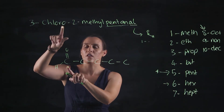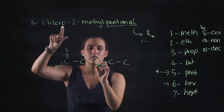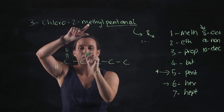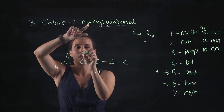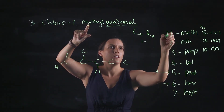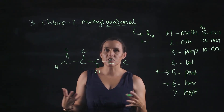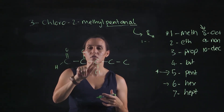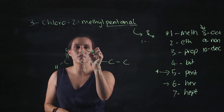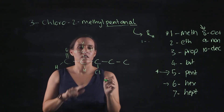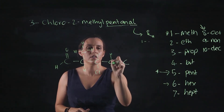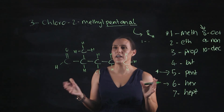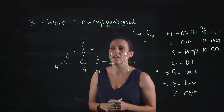Now for the substituents: carbon one is established, so on carbon three I have a chloro — one, two, three — I'll draw it down. On carbon two I have a methyl — I'll draw it up to avoid crowding — that's a single carbon for the methyl. Adding in hydrogens: carbon one already has four bonds so it's fine; carbon two has three bonds so it gets one more; carbon three has only one bond so it needs three more; the remaining carbons need one more, two more, and three more hydrogens respectively.